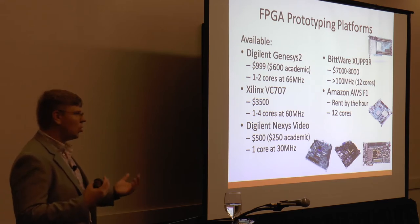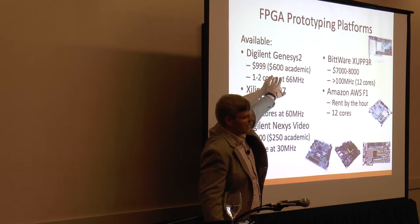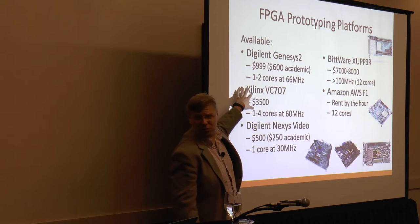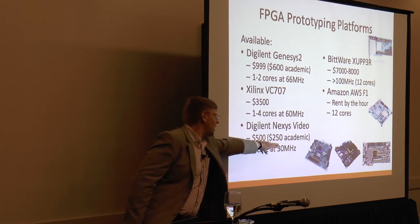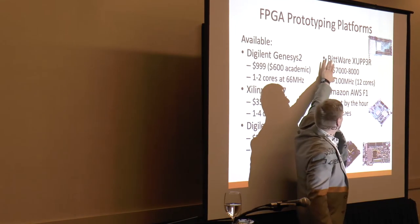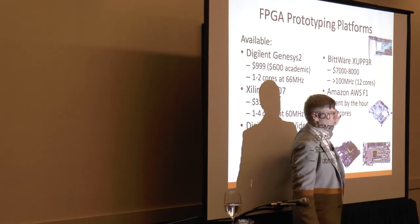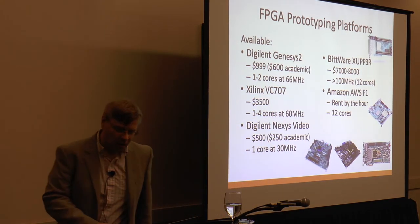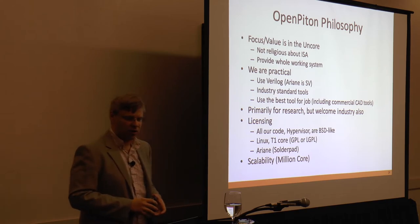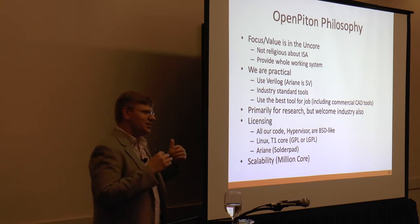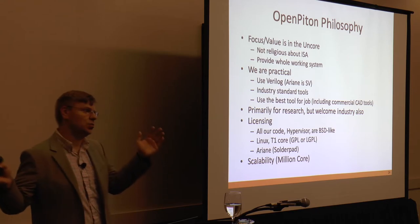These are the platforms we already support natively in the release right now. The board sitting in front of you is about $600 academic — we fit two cores on there. The VC-707 fits three or four cores depending on what features you want to turn on. There's even a small one, the Nexys Video, which is quite affordable and fits one core. Then there's the more expensive side where you can fit a fair number of cores, or you can go tape out your own chip, or rent for a dollar sixty an hour from Amazon.